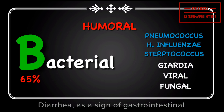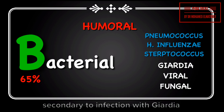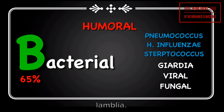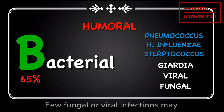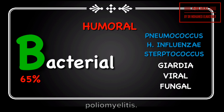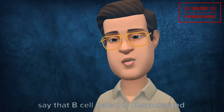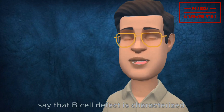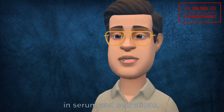Diarrhea as a sign of gastrointestinal tract infection is common, especially secondary to infection with Giardia lamblia. Conjunctivitis may also occur following B cell defect. Few fungal or viral infections may exist, except for enterovirus and poliomyelitis. B cell defect is characterized by decreased levels of immunoglobulins in serum and secretions.